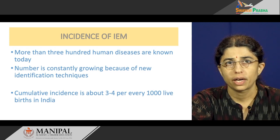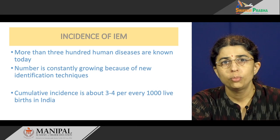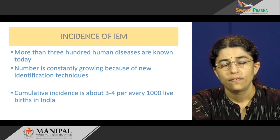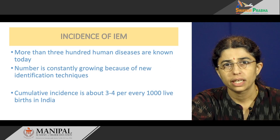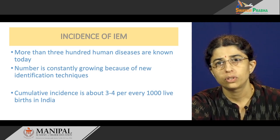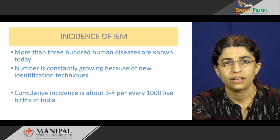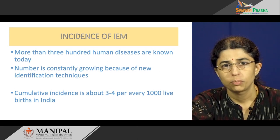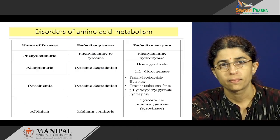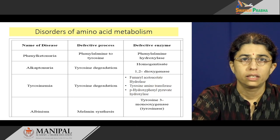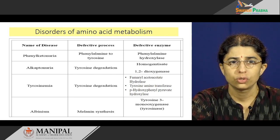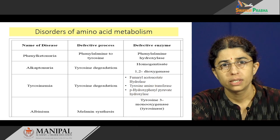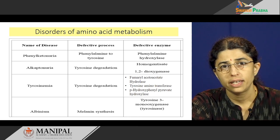Coming to the incidence of IEM, there are more than 300 human diseases known today, and the number is constantly growing because of various newer identification techniques. The cumulative incidence is about 3 to 4 per every 1000 live births. The main inborn errors of metabolism are associated with various amino acid metabolisms, carbohydrate metabolism, urea cycle disorders, as well as fatty acid metabolism.